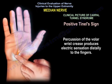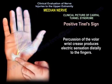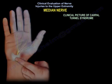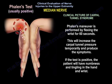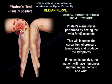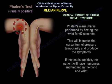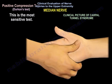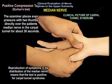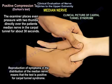Positive Tinel sign: percussion of the volar wrist crease produces an electric sensation distally to the fingers. Phalen test is usually positive, performed by flexing the wrist for 60 seconds, which temporarily increases carpal tunnel pressure and produces symptoms — the patient will have numbness and tingling in the hand and wrist. Positive compression test: Durkan's test, the most sensitive test, where the examiner places even pressure with two thumbs directly over the patient's median nerve in the carpal tunnel for about 30 seconds. Reproduction of symptoms in the distribution of the median nerve means the test is positive for carpal tunnel syndrome.